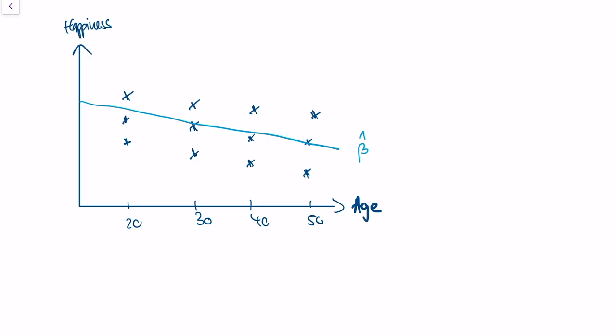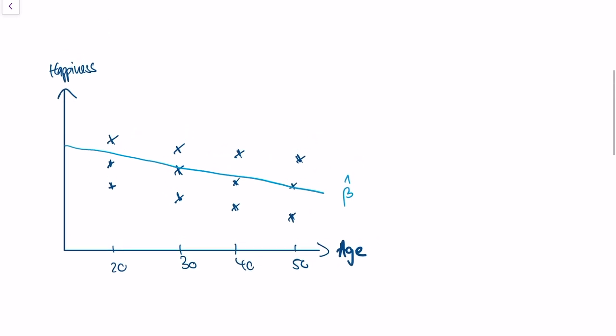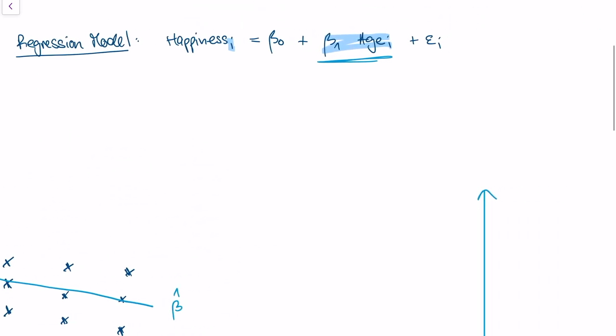What about the variance of the data? So in our model, the variance comes from the error terms. So let's say that those are just random components that influence happiness, but that have nothing to do with age. For instance,